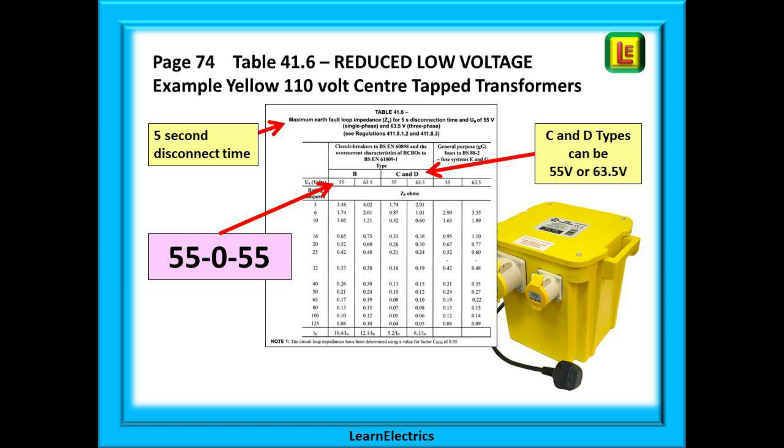And lastly, table 41.6 on page 74. We use this table for reduced low voltage systems, such as we would get from the output of the big yellow 110 volt transformers. These transformers are centre tapped earth transformers or CTE. And the voltage output is often written 55-0-55. Look at the table. The columns are numbered 55 volts for single phase and 63.5 volts for three phase.